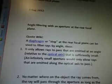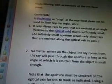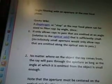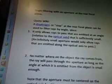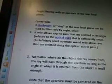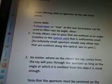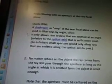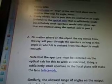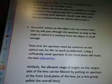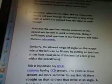So angle filtering with the aperture at the rear focal plane. I'm going to quote from Wiki. A diaphragm or stop at the rear focal plane can be used to filter rays by angle since it only allows rays to pass that are emitted at an angle relative to the optical axis that is sufficiently small. An infinitely small aperture would only allow rays that are emitted along the optical axis to pass.